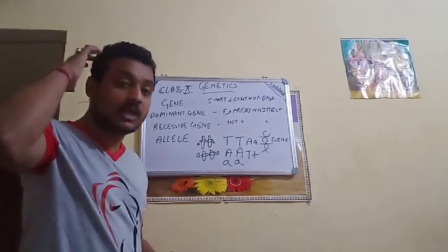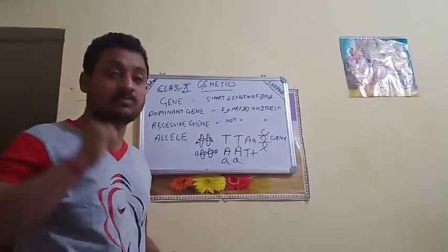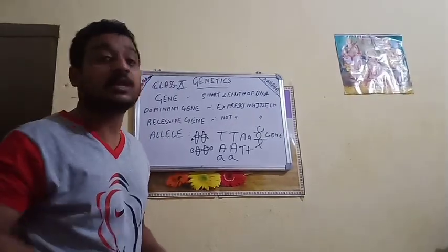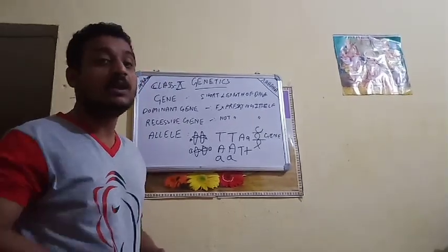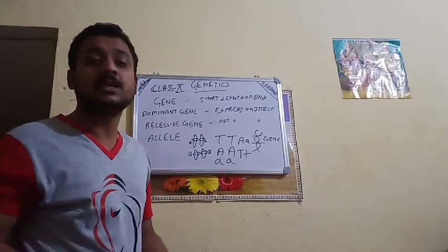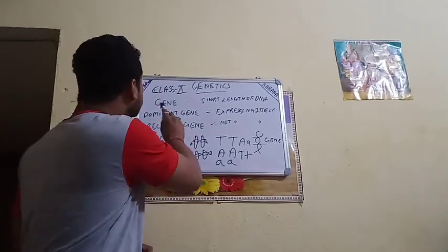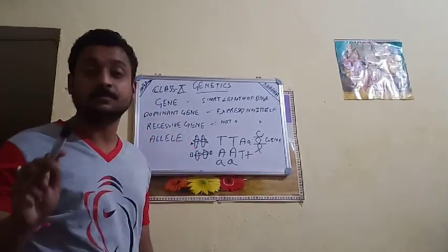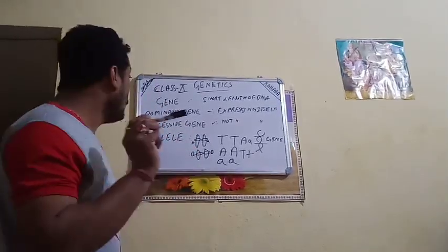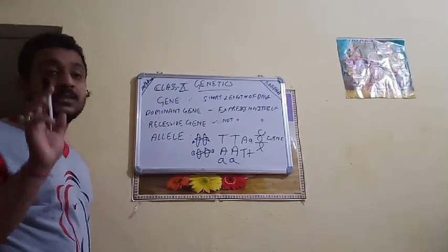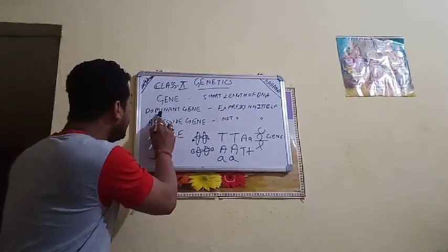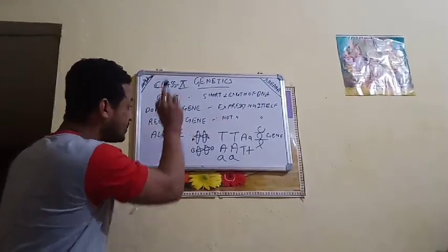Characters like whether hair will be curly or straight, eyes will be brownish or bluish, skin color will be fair or dark — all these characters are expressed by genes. Now when we talk about genes, there are two types: dominant gene and recessive gene.